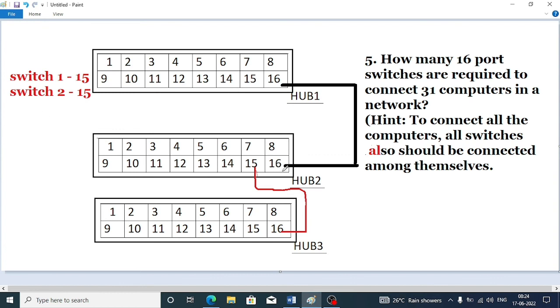We already have two ports reserved, so we have only 30 ports left. That's why we need one more switch to connect the remaining computers. I hope you have understood the answer.